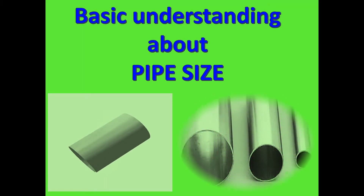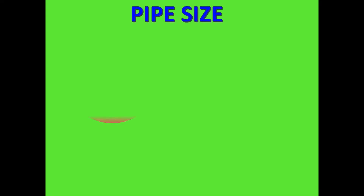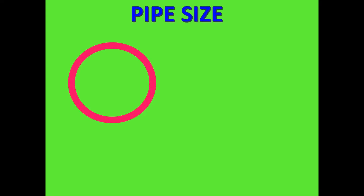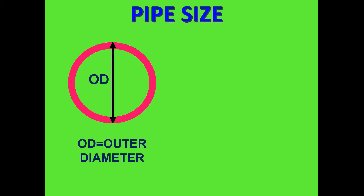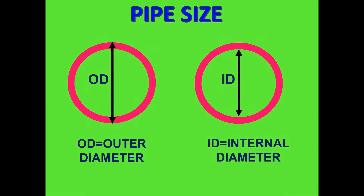I will show here some examples. I draw a sample pipe here, and from there we see the pipe size in different terms. First, OD, which is outer diameter or outside diameter. Next, ID, which is inside diameter or internal diameter.